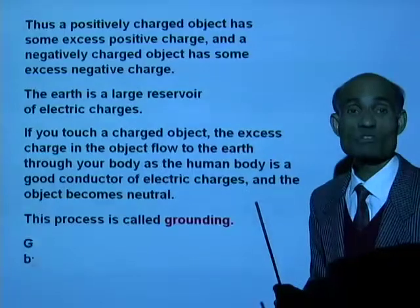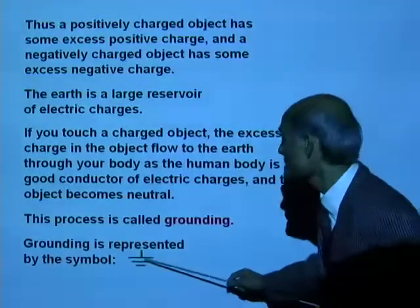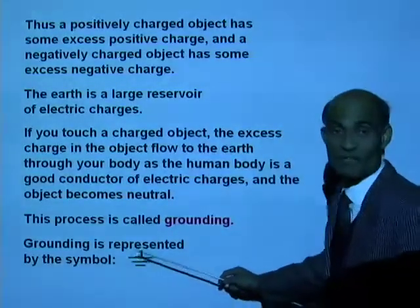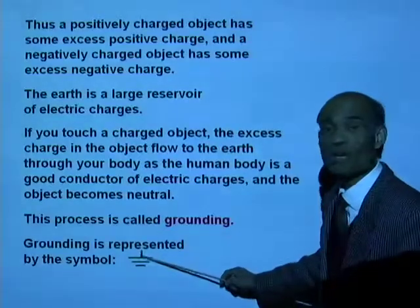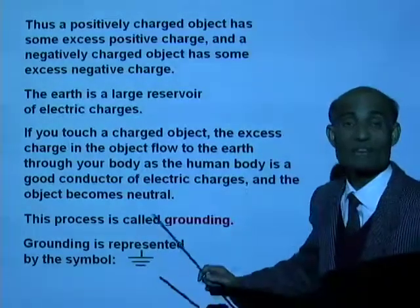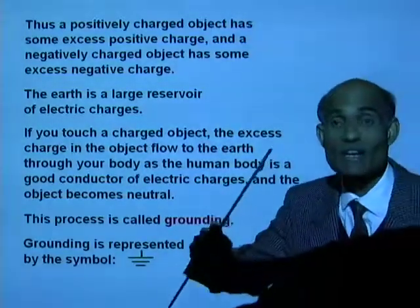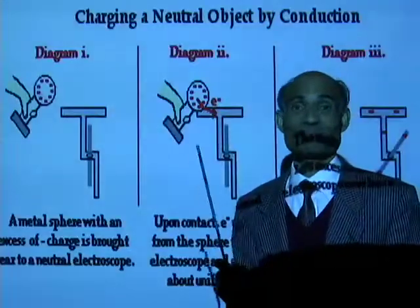Every electrical appliance that uses high voltage and current needs to be grounded — connected to the earth. This process is called grounding. In electrical circuits, we use a specific symbol for grounding, and where you see this symbol it means the electrical circuit is connected to the earth at that point.